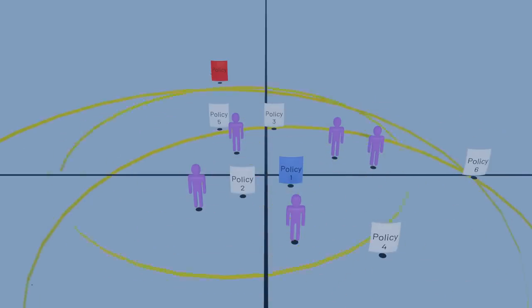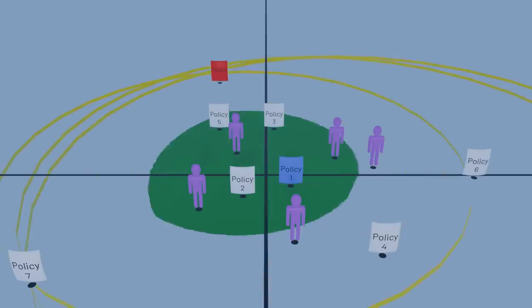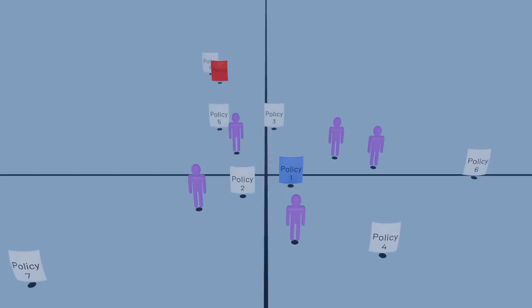Repeating this enough times, we'll eventually find a policy so far removed from voters' preferences that everyone would prefer the red policy. By playing voters against each other, we the agenda setters have caused them to agree on a policy that's much worse for everyone than the policy they began with.